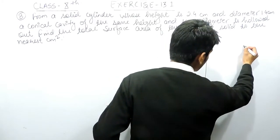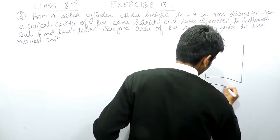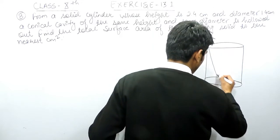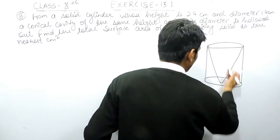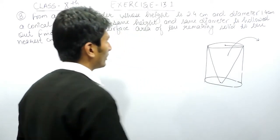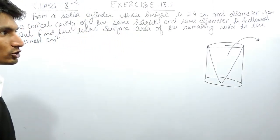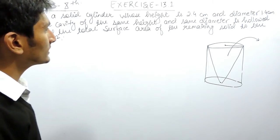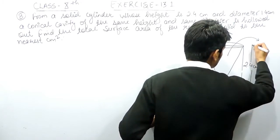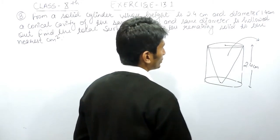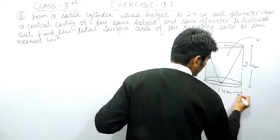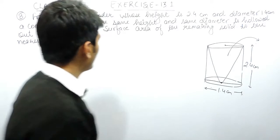This is the cylinder, and from this cylinder a conical cavity of the same height and same diameter is taken out. You have to find the total surface area of this remaining solid. The height of the cylinder is given as 2.4 centimeters and the diameter is given as 1.4 centimeters.